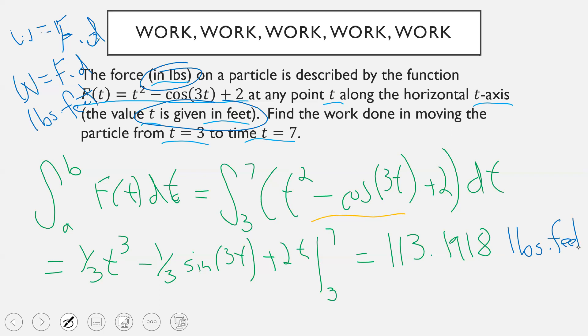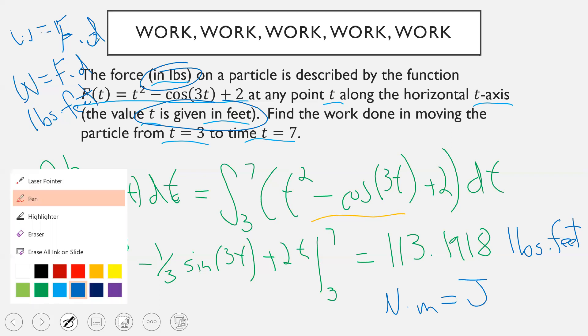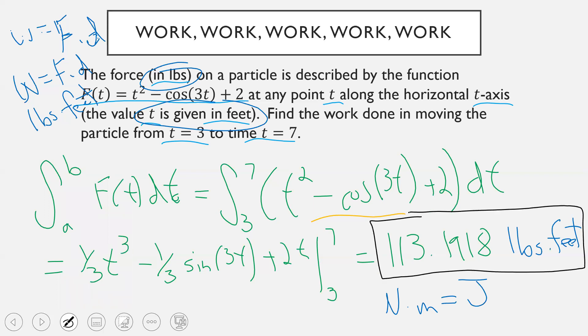And thinking back to the example we did on the previous slide, we had the units that were Newtons times meters, which is what is often used in the metric system. And another way to write that is joules. Okay, so if we were doing this in the metric system, we'd have Newtons times meters or joules. Here, doing it in the imperial system, our system, we get pounds times feet. So in this case, the amount of work done is 113.198 pound feet or pounds times feet.